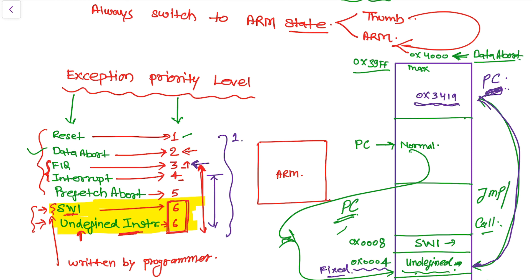The FIQ exception occurs when an external peripheral device sends a fast interrupt signal. The normal IRQ interrupt also occurs when an external peripheral gives a signal. The difference between FIQ and IRQ is that IRQ is a normal interrupt and FIQ is a fast interrupt. It is up to the embedded hardware designer to select which embedded device should raise FIQ and which should raise IRQ — these will be covered in detail in following tutorials.